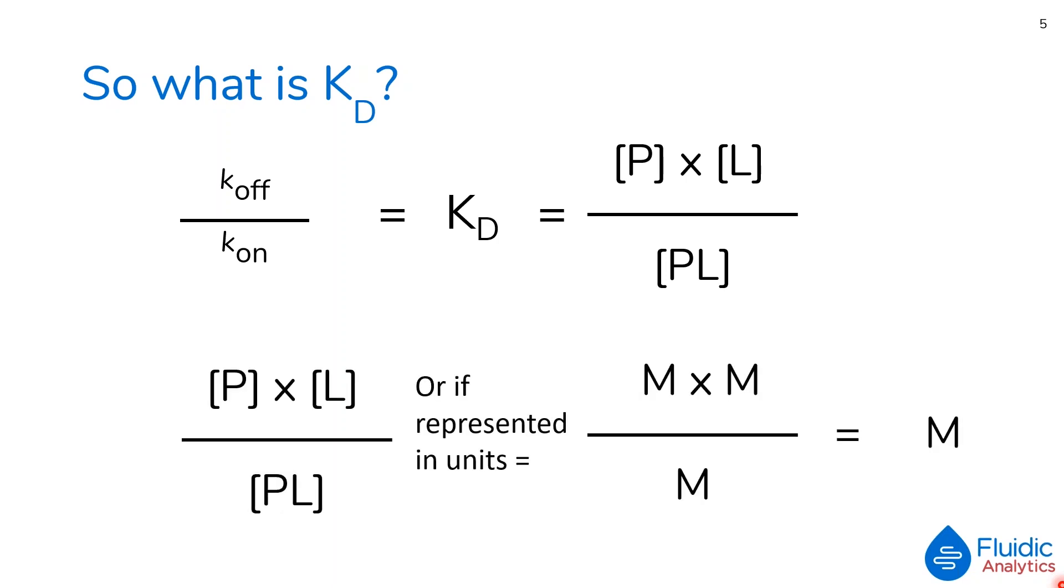This might seem confusing at first, but if we look at the equation above as a set of units, then it becomes clear that the smaller the KD, the more affinity two proteins have for each other.